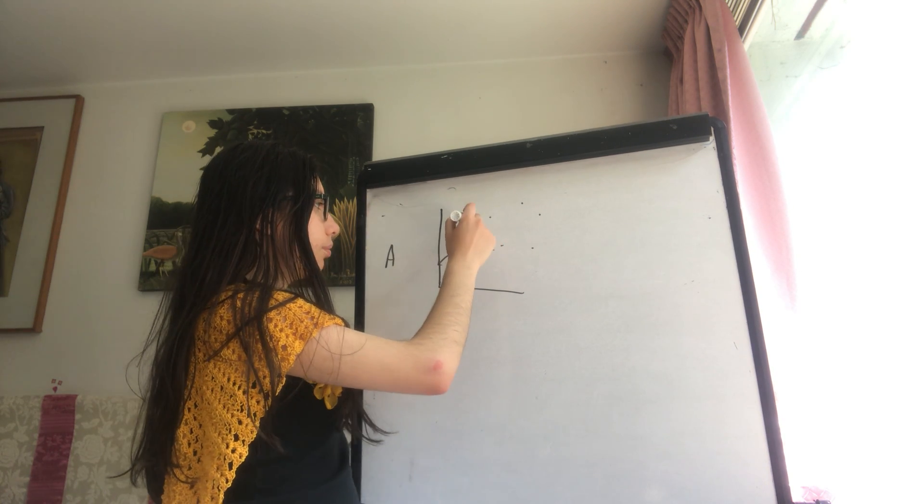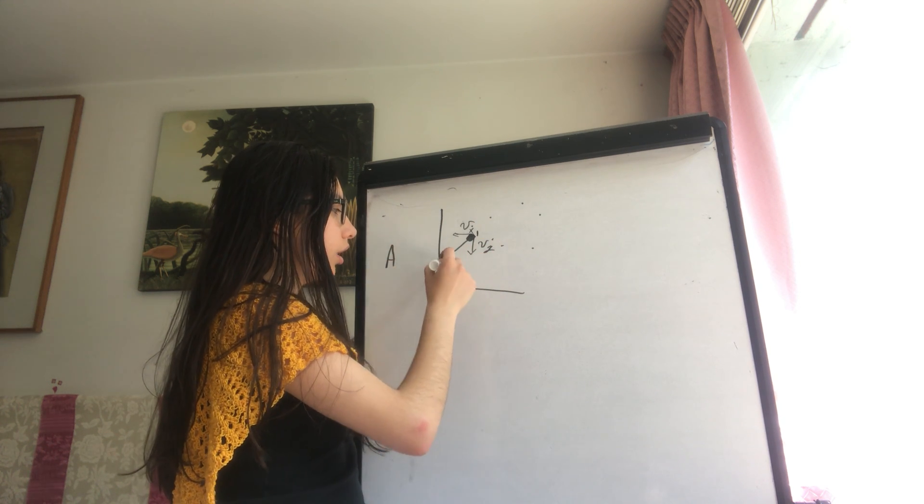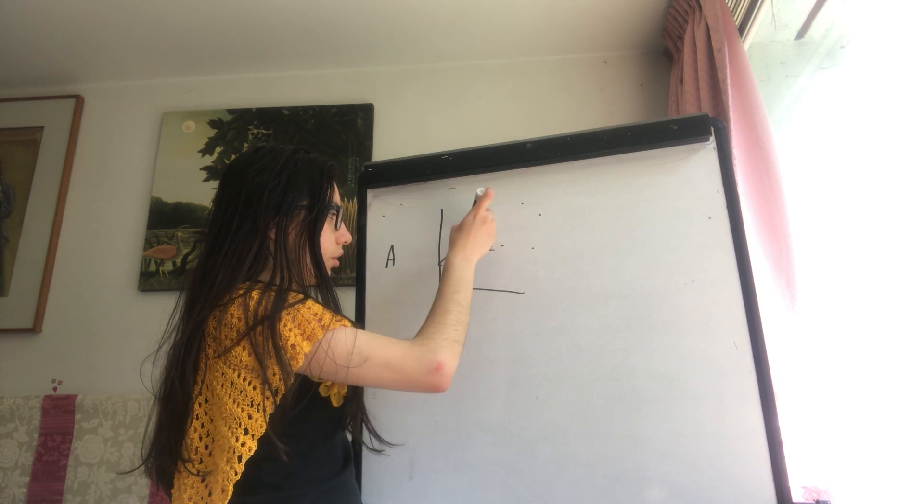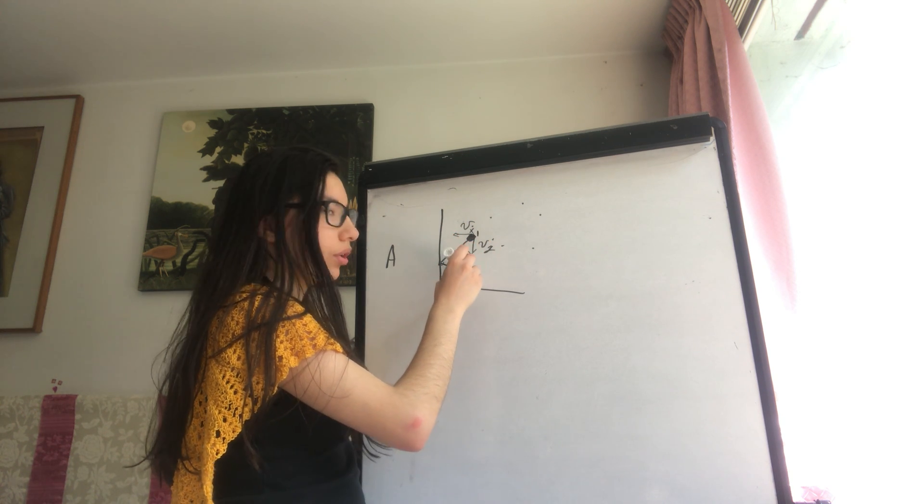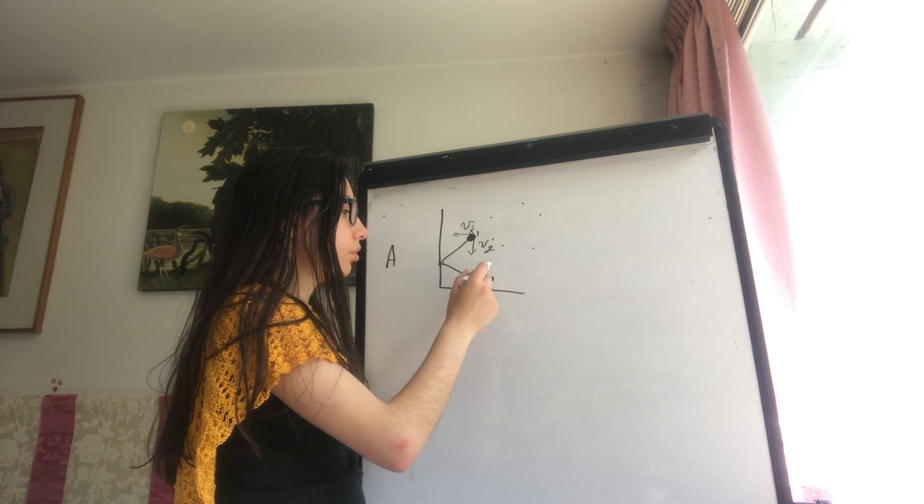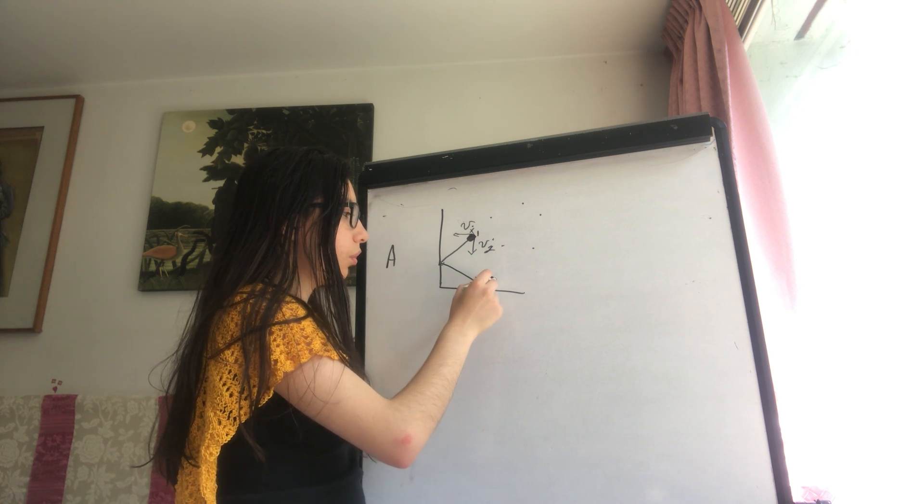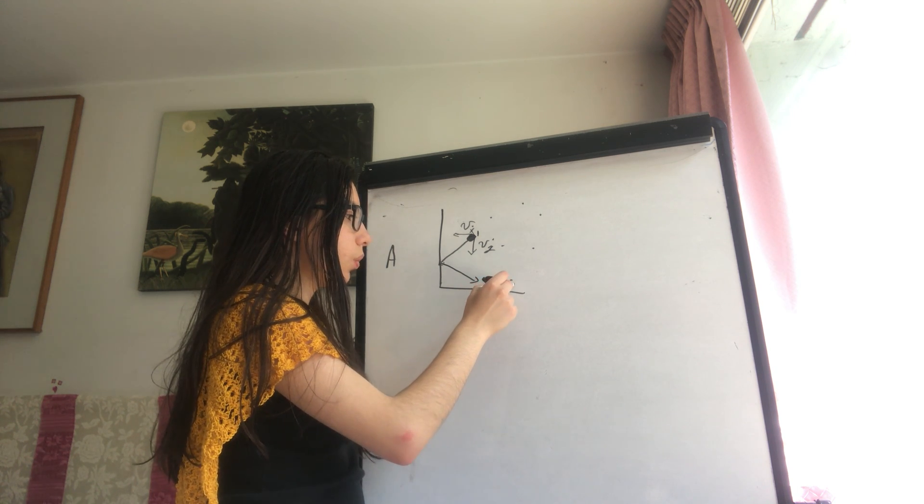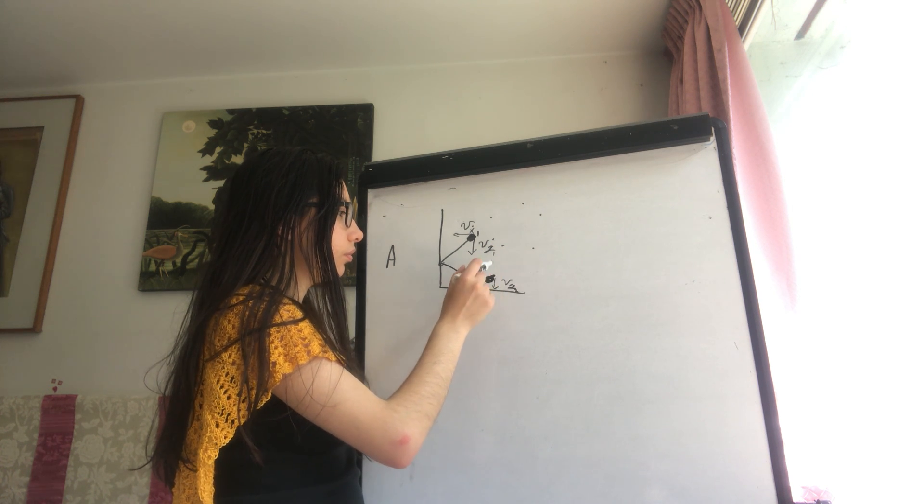Let me call this V sub 1, and when it returns after colliding, it will go in this direction. Now the velocity in the Y component is the same, Vy, and this time the molecule goes towards this side.